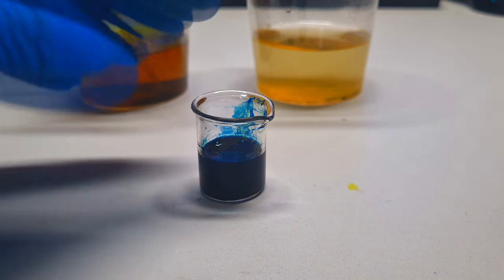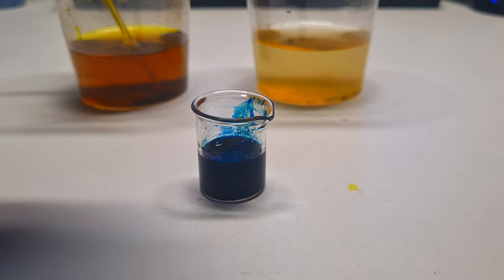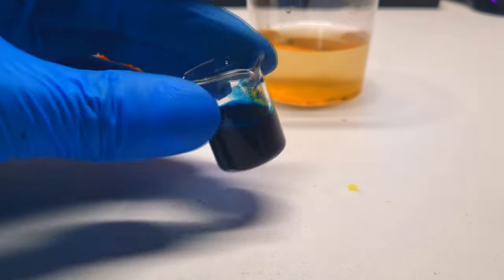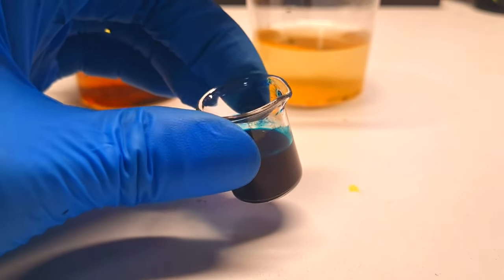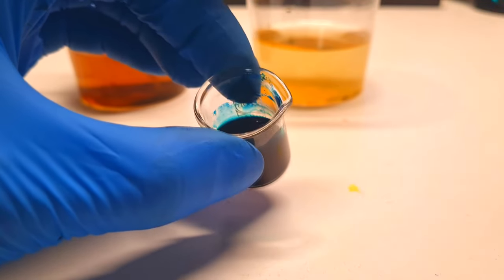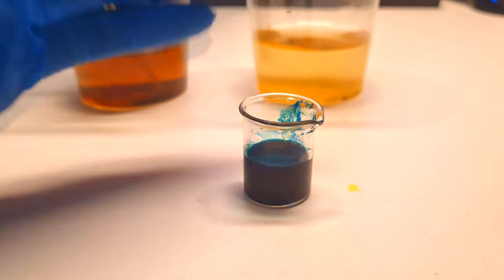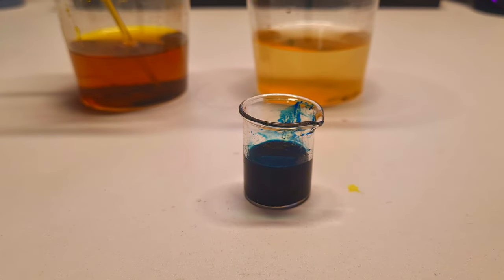In this stage you actually need to wait that almost all the water will evaporate, and then you can use this Prussian blue powder for your active material. But instead of waiting for all the water to evaporate,